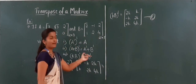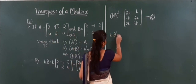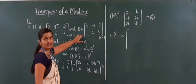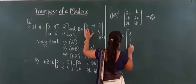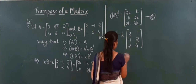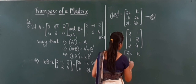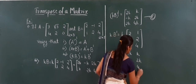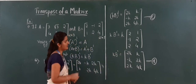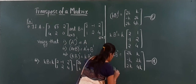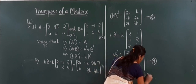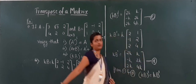Now I compute k into B dash. Writing B transpose first — rows of B as columns: 2, minus 1, 2 and 1, 2, 4. Multiplying by k gives: 2k, minus k, 2k, k, 2k, 4k — call this D. Comparing C and D, both matrices are equal. Hence (kB) whole transpose equals k into B transpose. Verified.